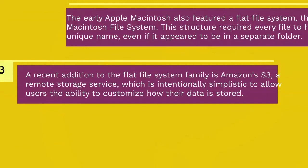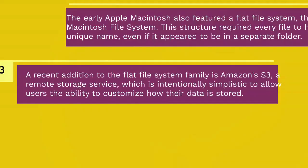The early Apple Macintosh also featured a flat file system, the Macintosh File System. It was unusual in that the file management program, Macintosh Finder, created the illusion of a partially hierarchical filing system on top of MFS. This structure required every file to have a unique name even if it appeared to be in a separate folder.